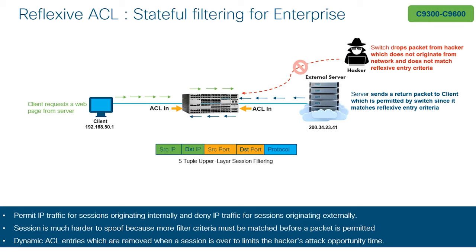Reflexive ACLs can be used to permit return IP traffic for sessions that are originating from inside the network, but deny IP traffic for sessions that are originating from the outside network.